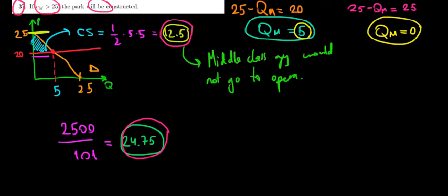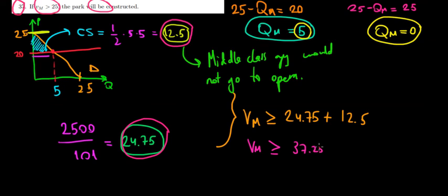In other words, the valuation of the middle class guy must be greater than or equal to the loss in taxes, 24.75 plus the loss in utility, which is 12.5. So the valuation of the middle class guy would be greater than or equal to 37.25.